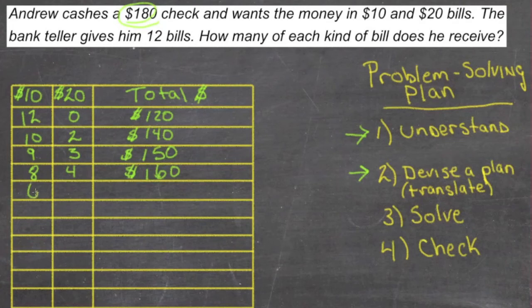Let's go to six 10s and six 20s. Now we have six times 10 is 60, and six times 20 is 120. 120 and 60, yeah, that's 180.